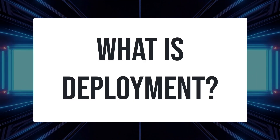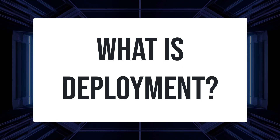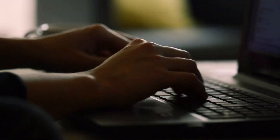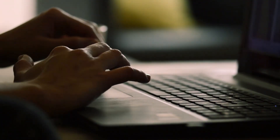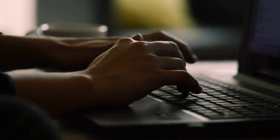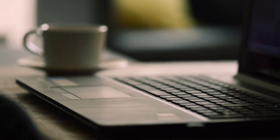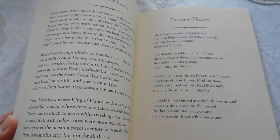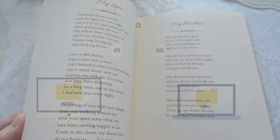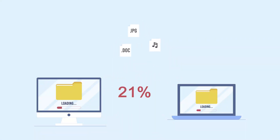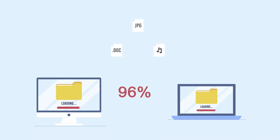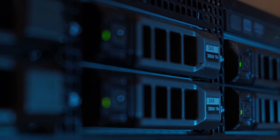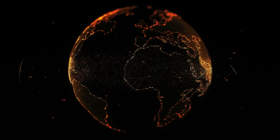First, let's start with the basics. What exactly is deployment? Think of it this way: you've written a beautiful novel on your computer, but if it stays on your hard drive, only you can read it. Deployment is like publishing that novel, making it available for the world to enjoy. In technical terms, deployment is the process of taking your application from your development environment — that's your laptop or local machine — and putting it on a server that is accessible via the internet 24/7.